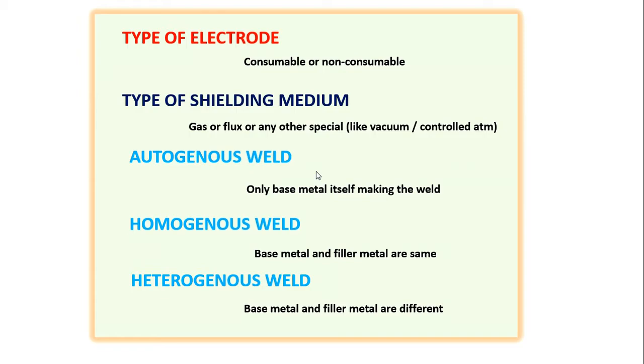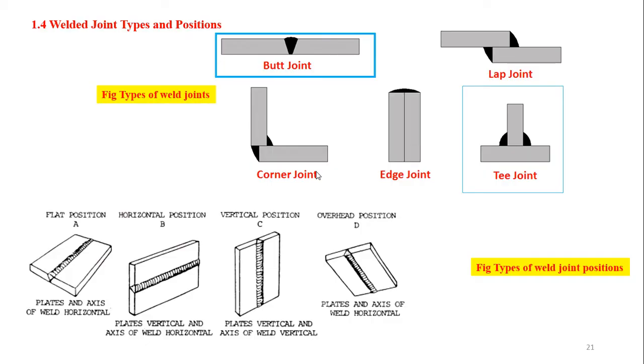Types of weld joints - as shown in the figures, there are two joining processes visible: one is butt joint, another is T-joint. Don't be confused, be clear with these two. Check out the position - vertical position is what we are always using. Flat position and horizontal position are very difficult. I have not shown them in the figure. Vertical position is best suitable for this welding process, so you can go with this.